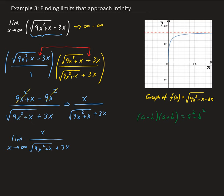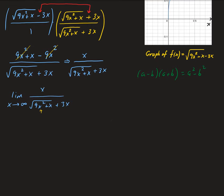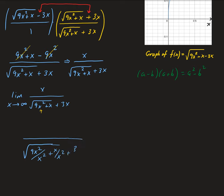To do this, we're going to look at the denominator and use the term with the largest degree. In this case we have x squared, so we're going to divide every term by x squared for our function. So in the denominator, we have the square root of 9x squared divided by x squared plus x over x squared, plus 3x over x squared.